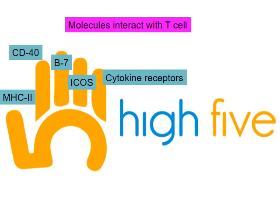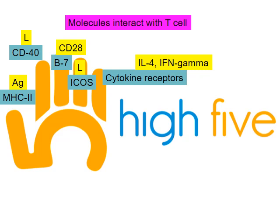When I said molecules that interact with T cells — the 'high five' — the rule of thumb is that MHC is the thumbs up for the T cell. If no MHC, it's thumbs down. Then CD40, B7, ICOS, and cytokine receptors — these four have to interact with T cells. MHC binds the antigen, CD40 binds its ligand, and B7 binds CD28 — but remember, CD28 or CTLA4.